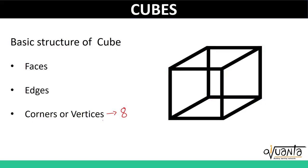Moving ahead, we have got faces. There are six faces in a cube: the front one, the rear one, the face at the top, the face at the bottom, the face at the left, and the face at the right. So there are six faces in a cube, and all these faces are square faces and all the faces are identical.